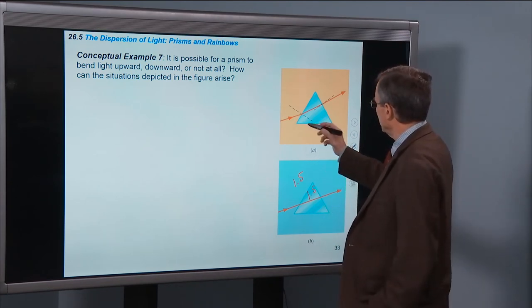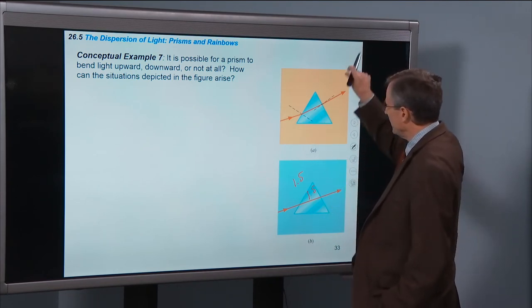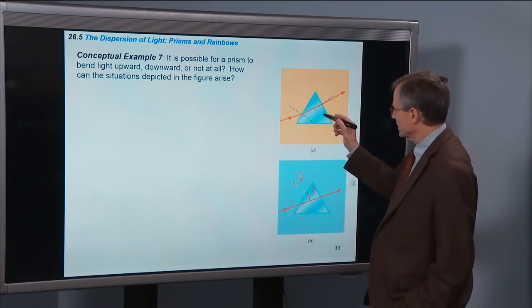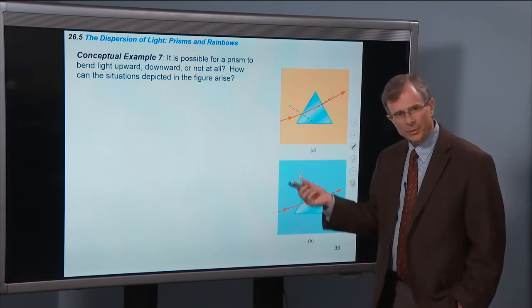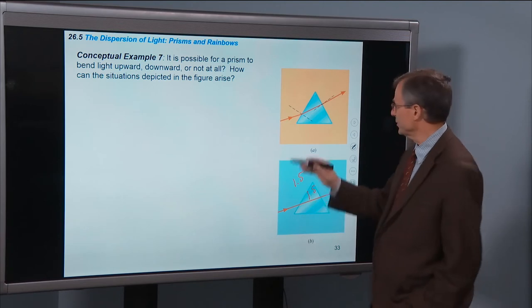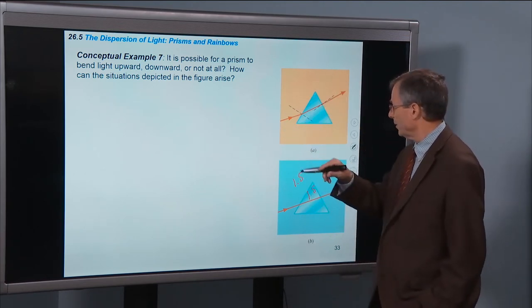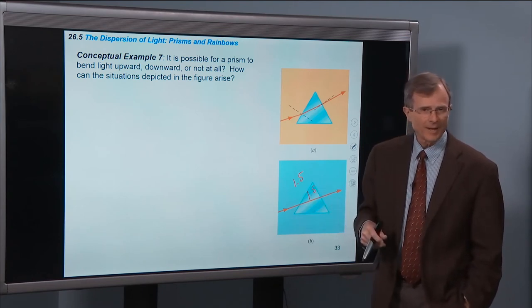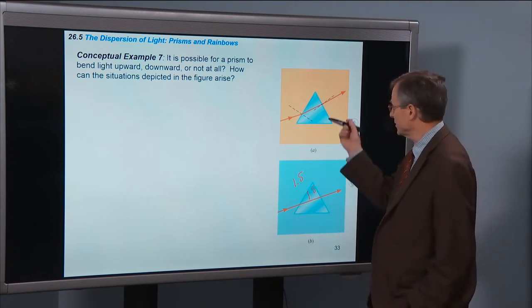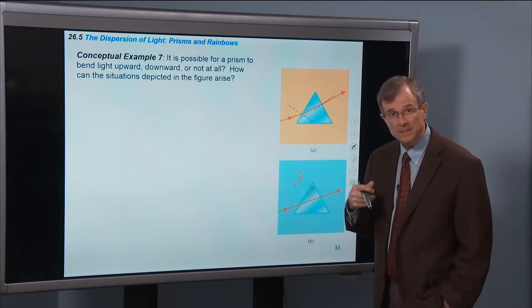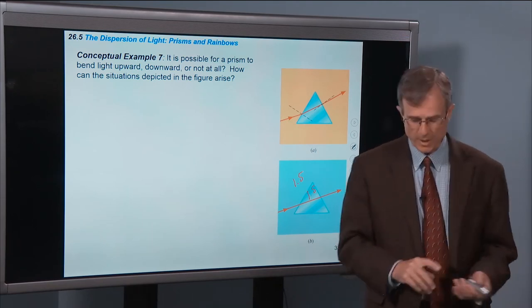So how can you get the different situations? You can get it bending one way if the index of refraction of the material is greater than the index of refraction of the material surrounding the prism, or get it bending the other way if the index of refraction of the prism is less than the index of refraction of the surrounding material.